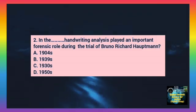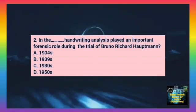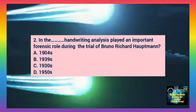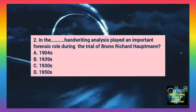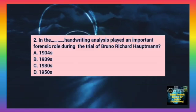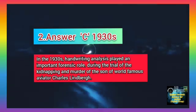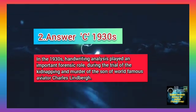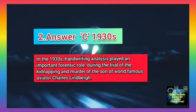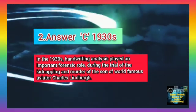Question number 2. In which year did handwriting analysis play an important forensic role during the trial of Bruno Richard Hauptmann? Option A: 1904. Option B: 1939. Option C: 1930. Option D: 1950. The correct answer is C, 1930. In 1930, handwriting analysis played an important forensic role during the trial of the kidnapping and murder of the son of the world-famous aviator Charles Lindbergh.